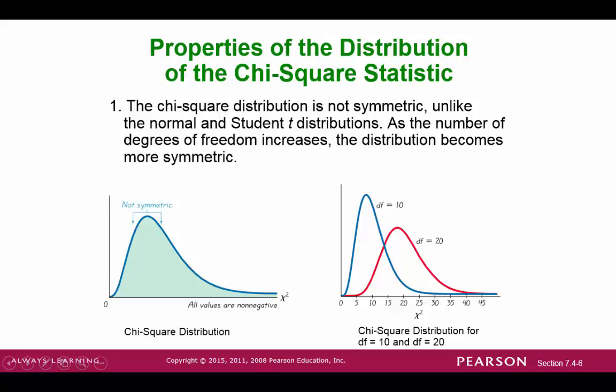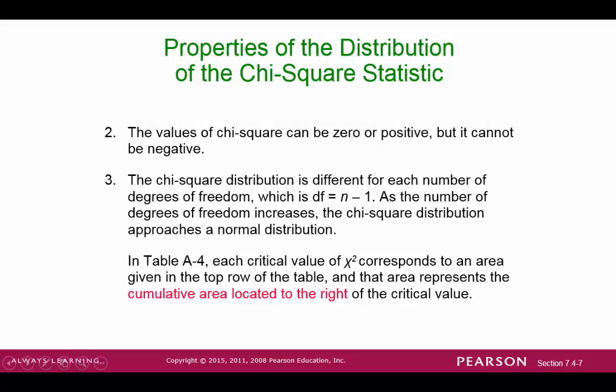Some properties of the chi-square distribution are as follows. Chi-square is mostly skewed to the right — it's not symmetric like the normal or the t distributions. It is dependent on degrees of freedom, and the larger the degrees of freedom, the more normal this distribution will get. Chi-square values are always zero or positive; it cannot be negative. It starts at zero and goes in the positive direction. Chi-square has different distributions for different degrees of freedom.